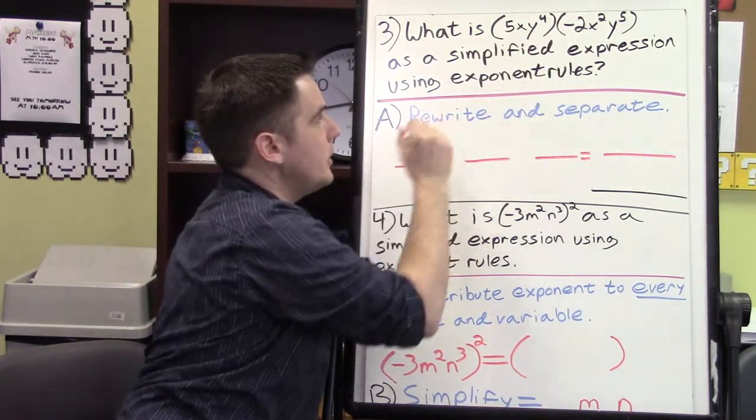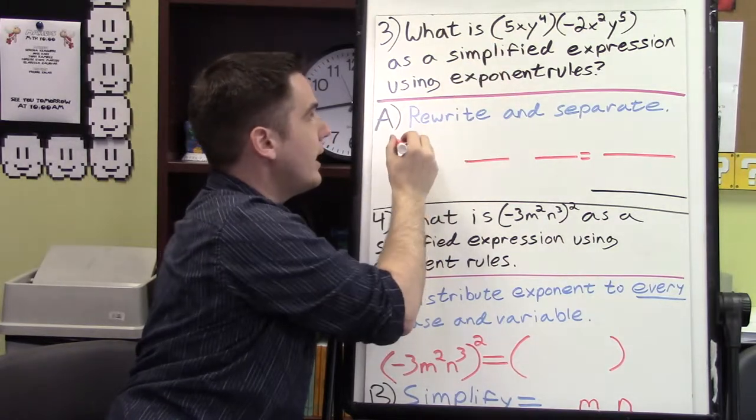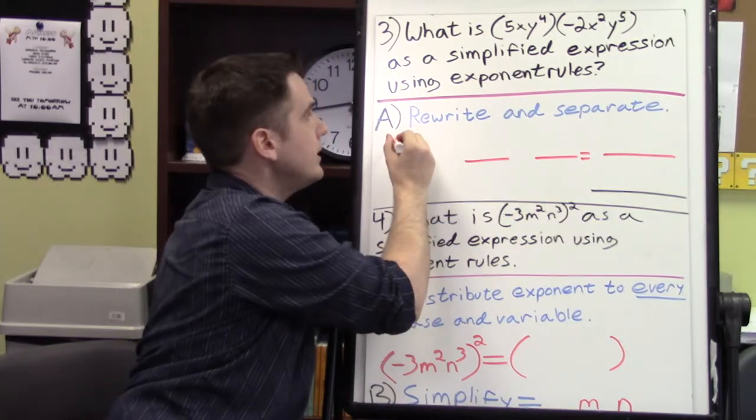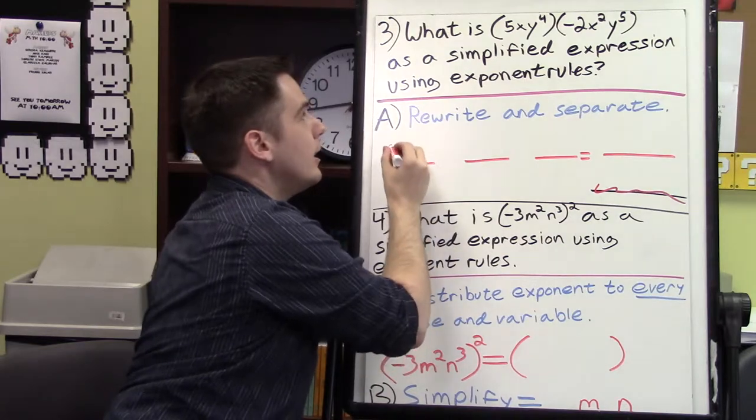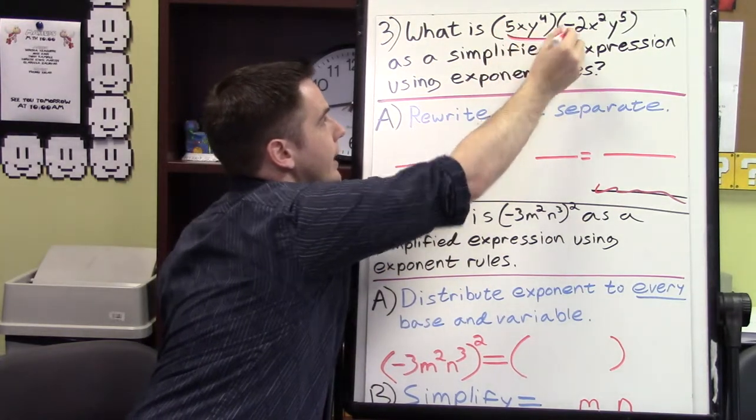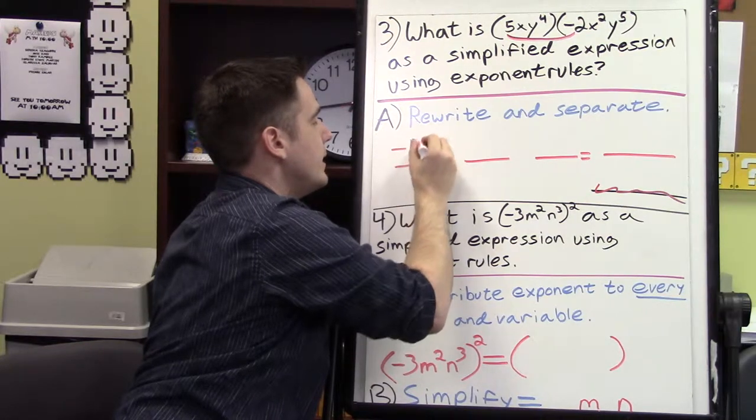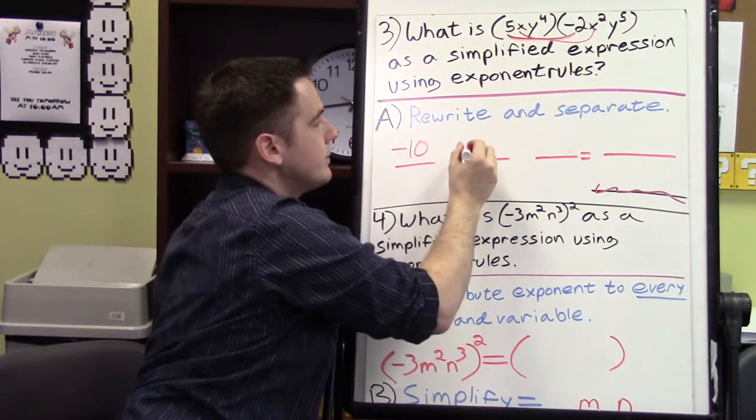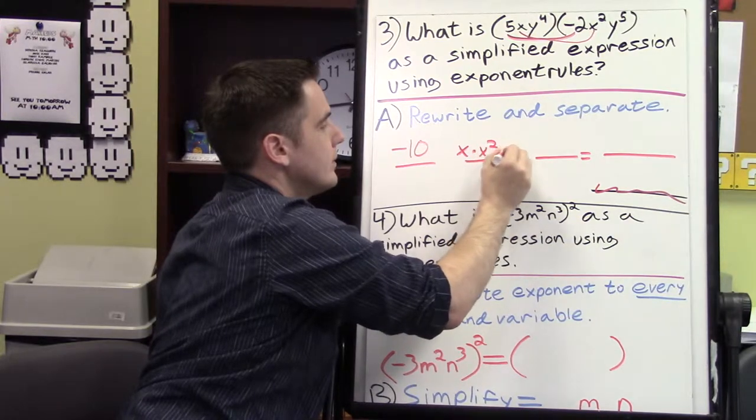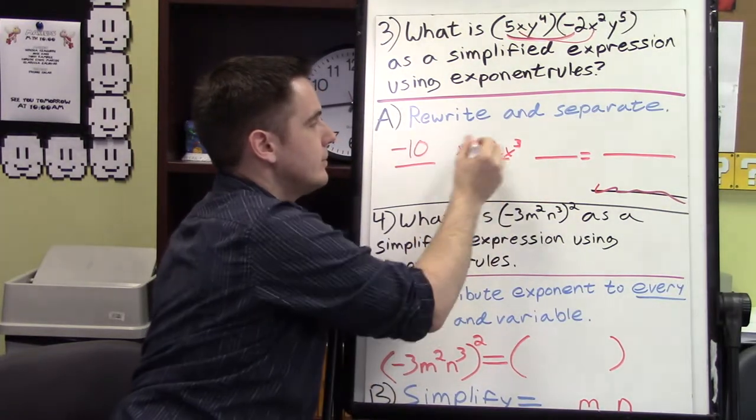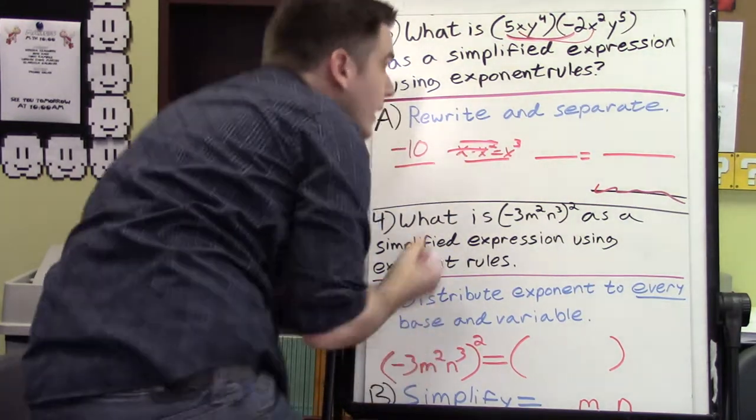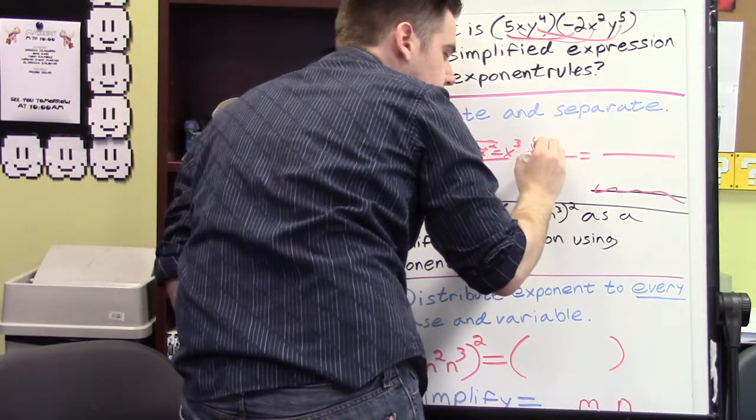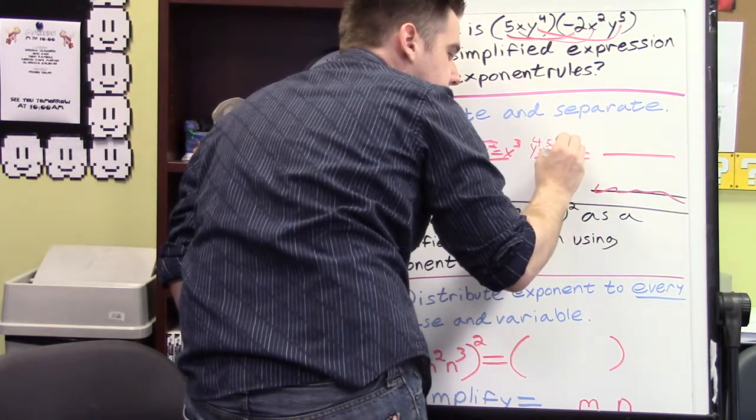Okay, so 5 and negative 2, those are two numbers that aren't exponents. So 5 times negative 2 is going to be negative 10. And then x times x squared equals x to the 3rd. And then finally, we've got y to the 4th times y to the 4th equals y to the 8th.